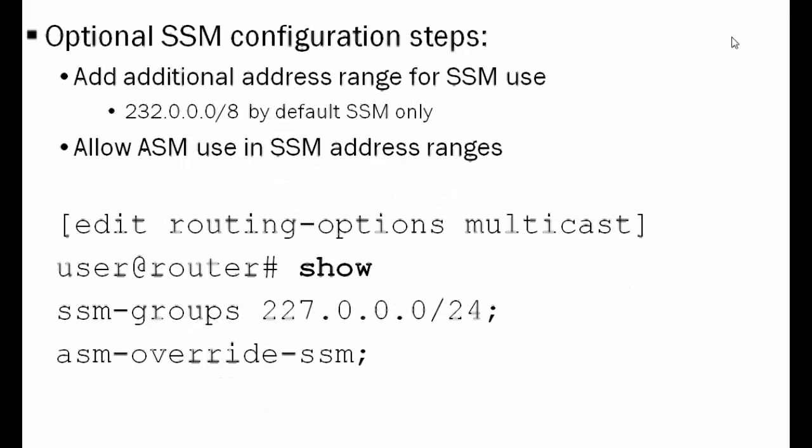The configurations to allow this are all done under edit routing options multicast. The first configuration allows source multicast groups to use the range 227.0.0.0/24, which is normally in the any-source multicast range. The ASM override SSM configuration allows the source-specific multicast address range — 232.0.0.0/8 — to be used for any-source multicast.